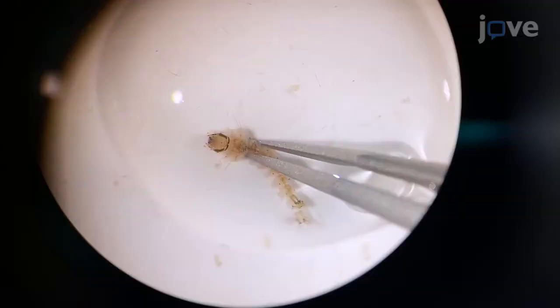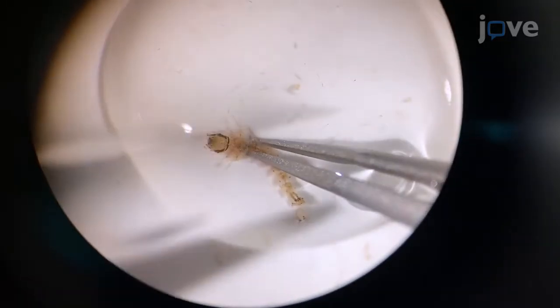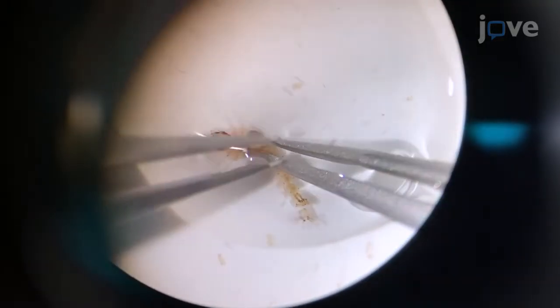By holding a number 5 forceps in each hand, grasp the larvae with forceps just below the head with the dominant hand and grip the head of the larvae with the non-dominant hand.